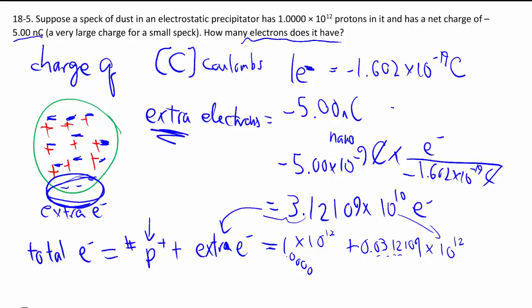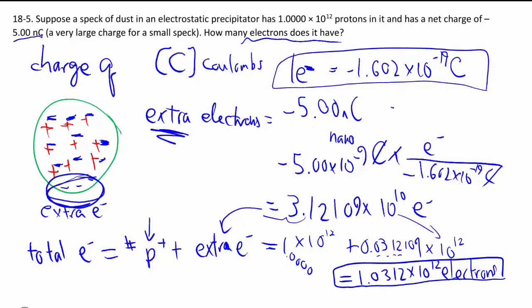Resulting in 1.0312 times 10 to the 12 electrons in total. As you can imagine, any time we talk about microscopic particles like atoms, electrons, protons, the number tends to get quite high. But that's just math. So the main thing is this conversion factor. For the proton, of course, it's going to be plus. And this is basically the fundamental elementary charge, as people might say.